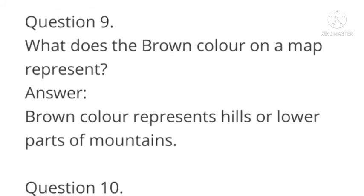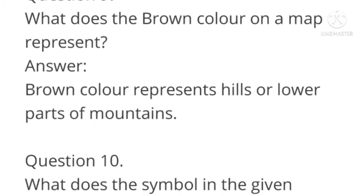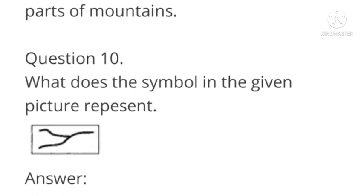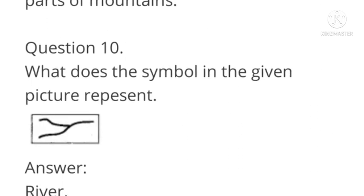Question number nine: What does the brown color on a map represent? Answer: Brown color on a map represents hills or lower parts of mountains.